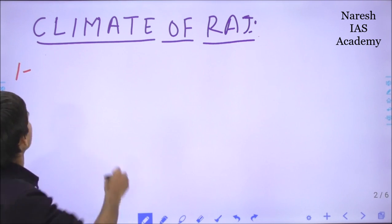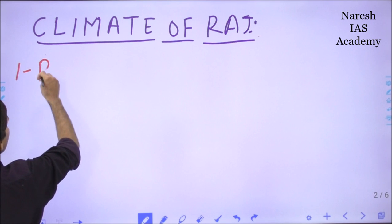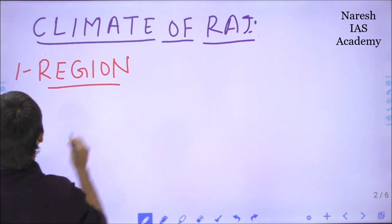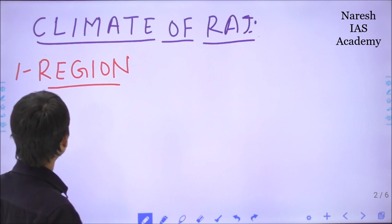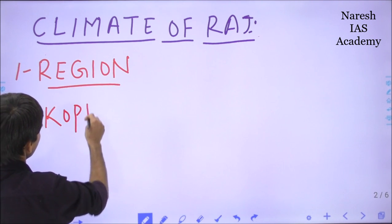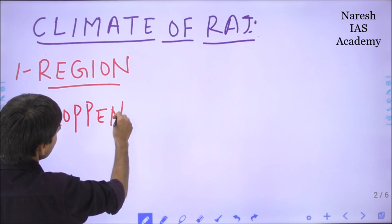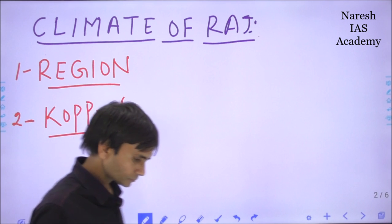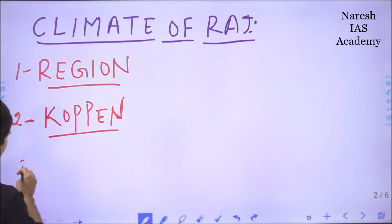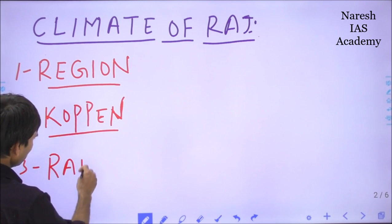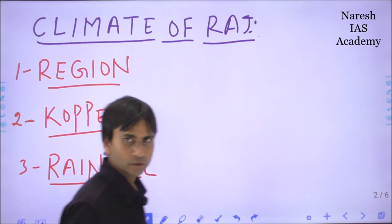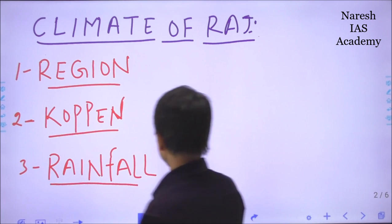Today I will discuss the important topics from Rajasthan geography — climate of Rajasthan and the climatic conditions prevailing in the Rajasthan region. First, the four kinds of climatic regions in Rajasthan. Second, climatic regions or features according to the geographer Koppen. Third, rainfall along with temperature. These are the three broad categories through which we will understand the climatic condition in Rajasthan.